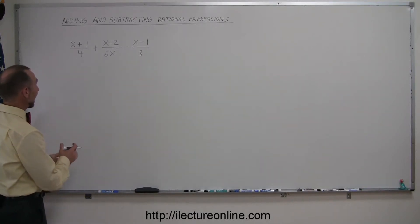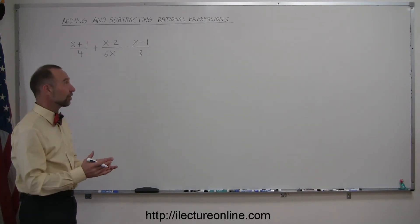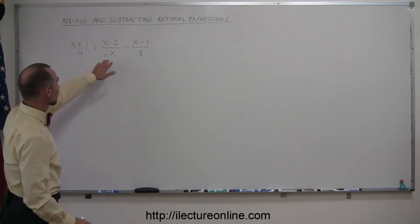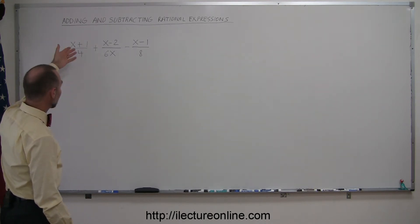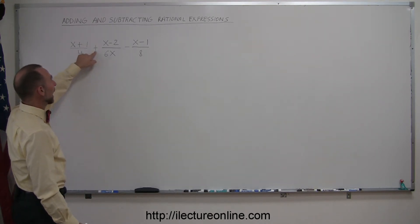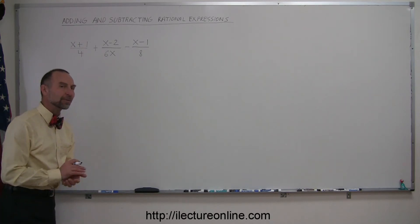Here's an example of how you should add or subtract a rational expression. In this case, it's a combination. You have three expressions. They're rational expressions because they're like fractions. Here we're adding, there we're subtracting. So how do we do that?